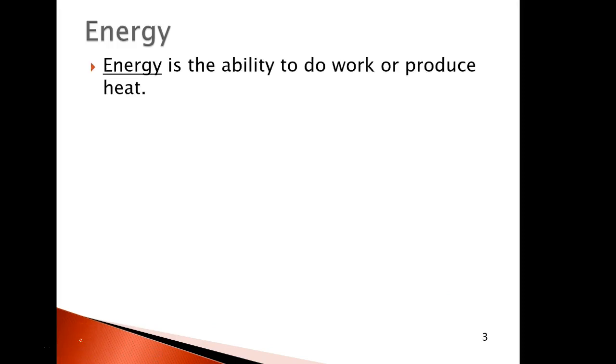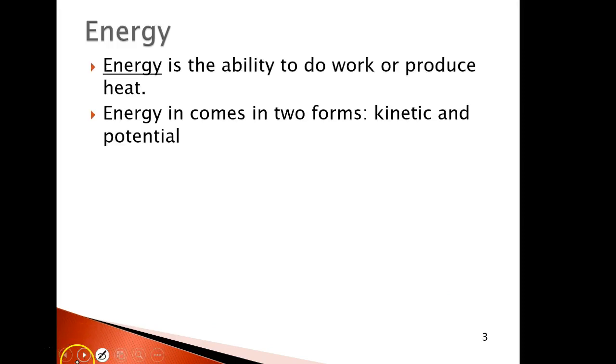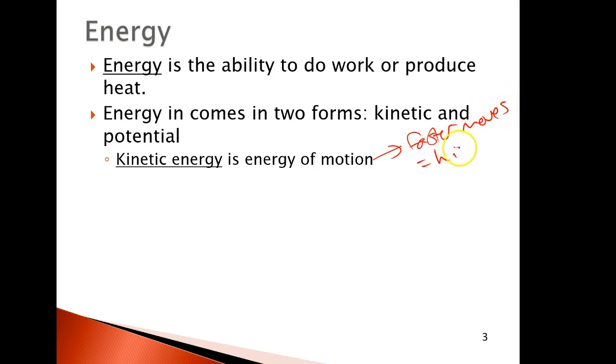So energy is the ability to do work or produce heat. It comes in two different forms, kinetic and potential. Kinetic energy we'll talk a lot more about when we get to gas laws, but it's basically the energy of motion. And the faster something moves, the higher the kinetic energy is. A good example of that is if you're riding your bike at 25 miles an hour or you get on a motorcycle, you're going 100 miles an hour. There is more motion with the faster velocity, therefore higher kinetic energy.